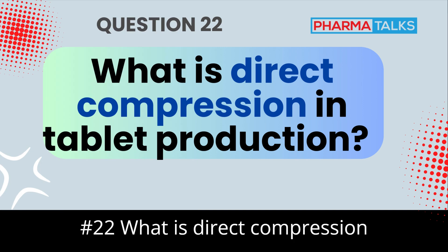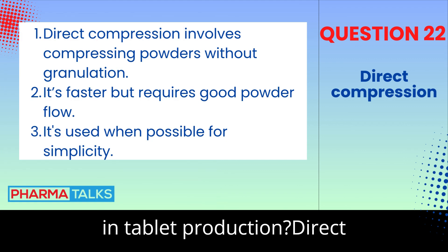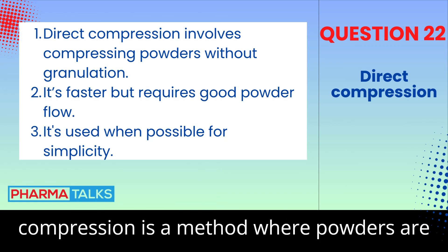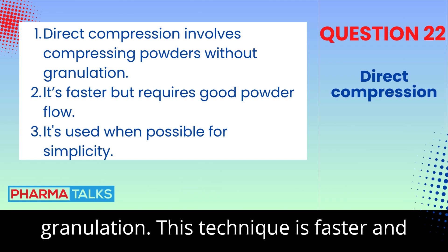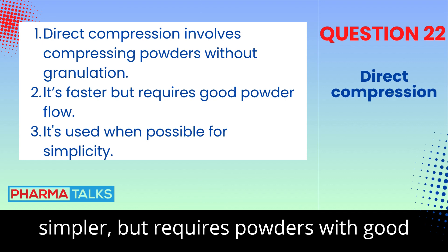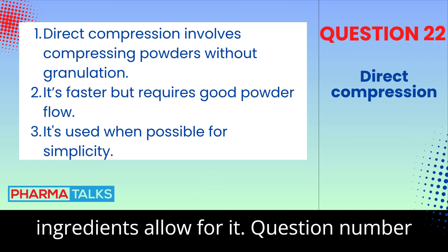Question 22: What is direct compression in tablet production? Direct compression is a method where powders are directly compressed into tablets without granulation. This technique is faster and simpler but requires powders with good flow properties. It's used when the ingredients allow for it.